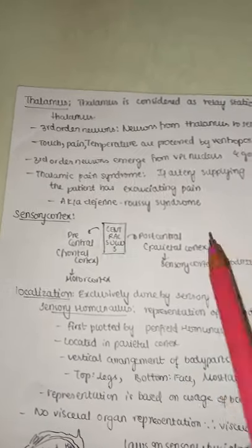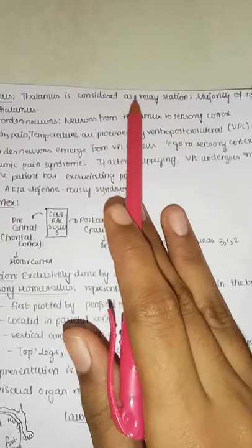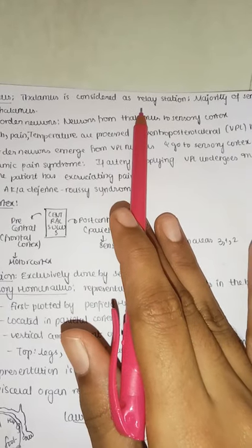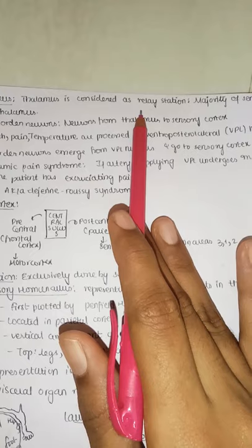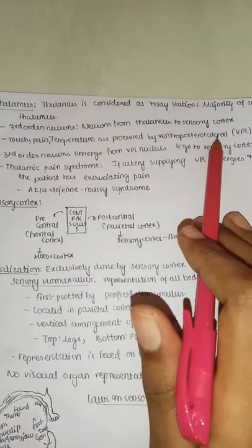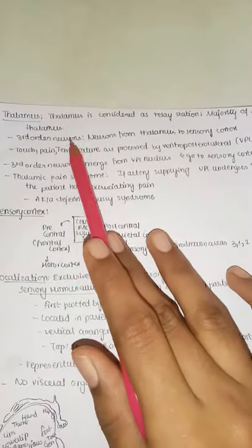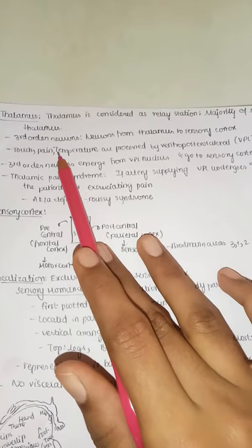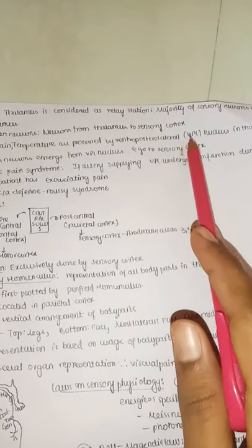The thalamus is the relay station where the majority of sensory neurons relay. Second-order neurons arrive from the spinal cord, and third-order neurons go from the thalamus to the sensory cortex. Touch, pain, and temperature are processed by the ventroposterolateral (VPL) nucleus of the thalamus.